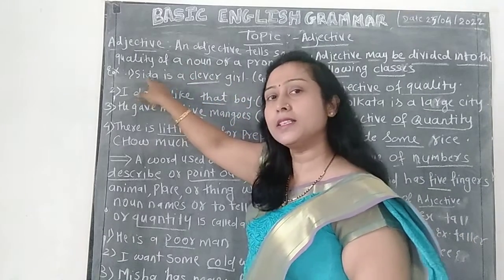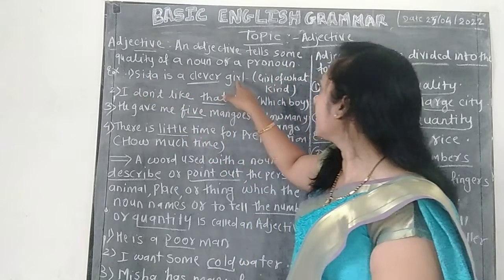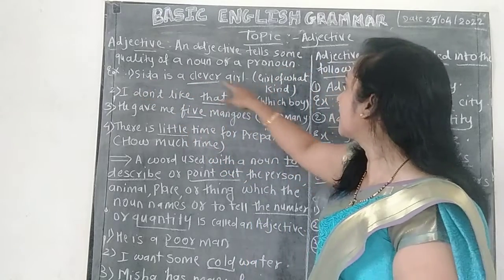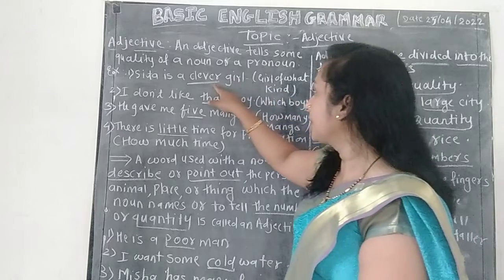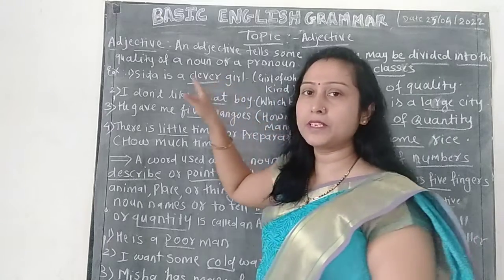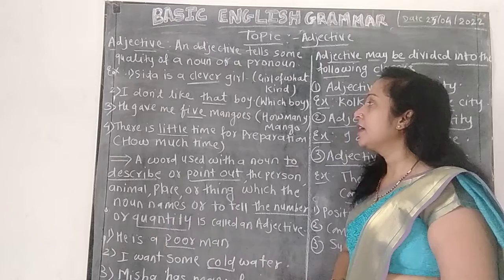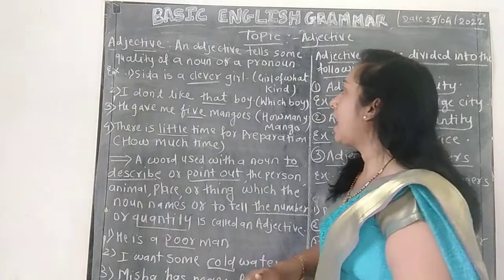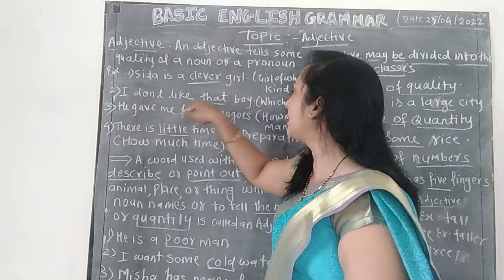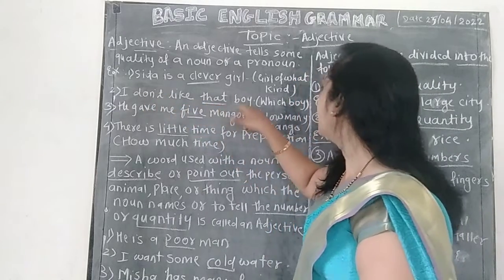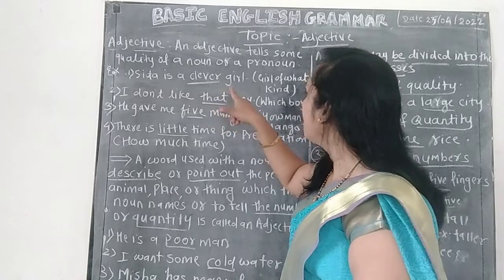Who is the noun in this sentence? Sita. Sita is a clever girl — clever tells what kind of girl, giving information about the noun. Next example: I don't like that boy. In this sentence, 'that' is the adjective.